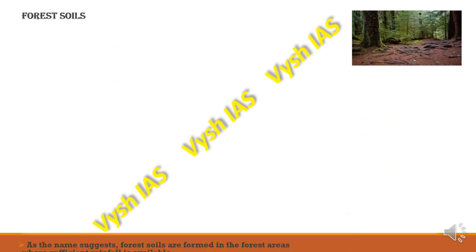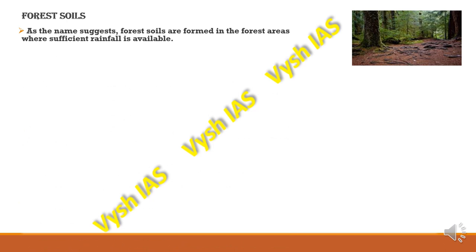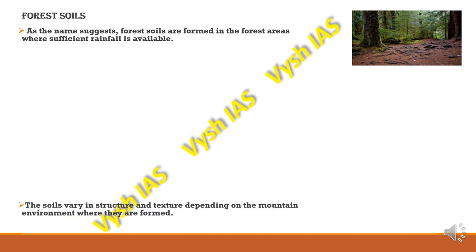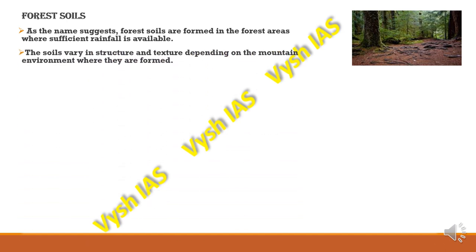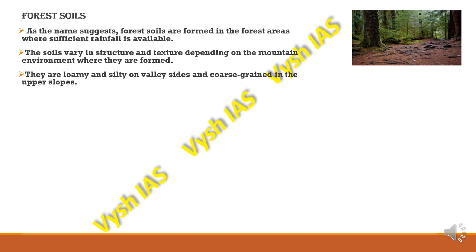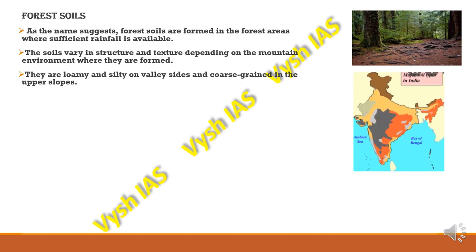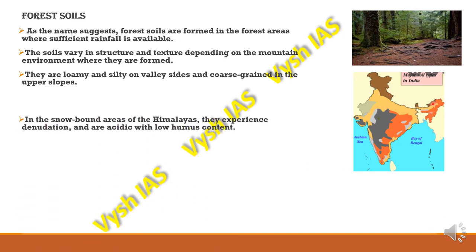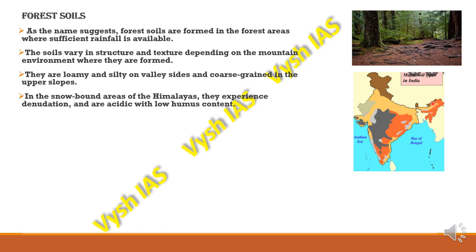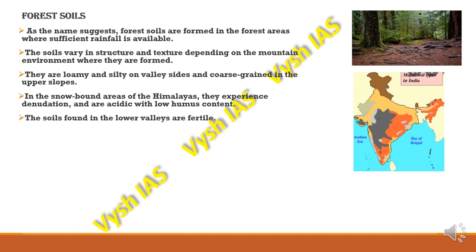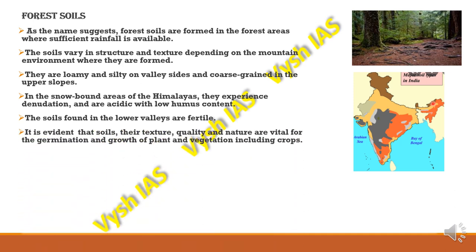Forest soils are mainly found in forest areas where rainfall is sufficiently available. These soils vary in structure and texture depending on the mountain environment. They are loamy and silty on valley sides and coarse-grained on upper slopes where rainfall is less. In snow-bound areas of the Himalayas, they experience denudation and are acidic with low humus content. They are also found in lower valleys, which makes them fertile.